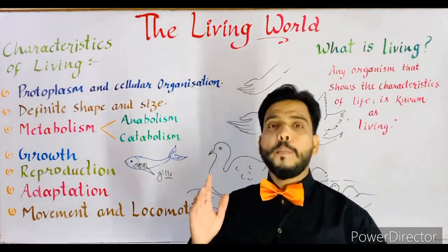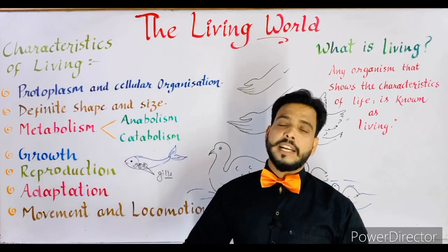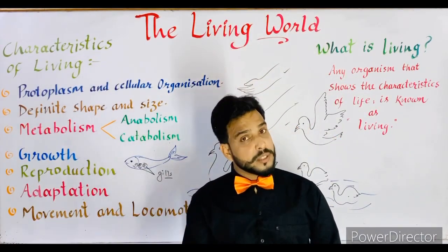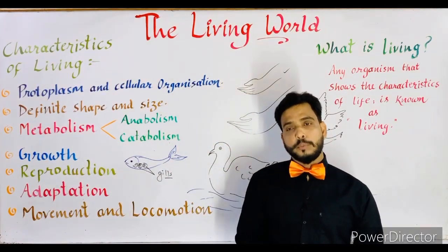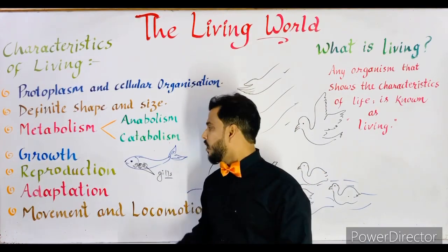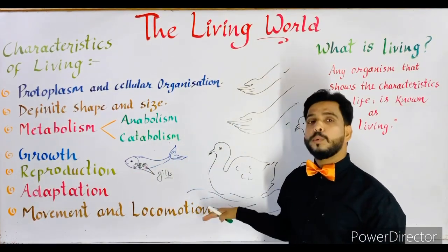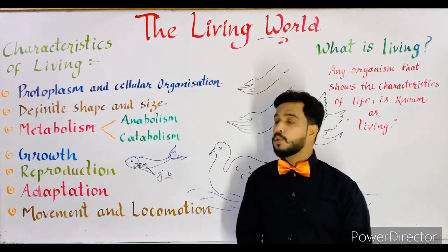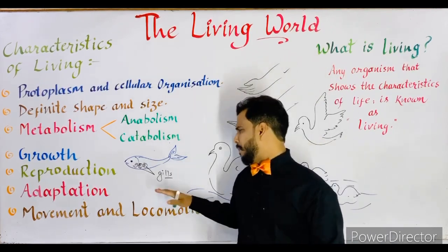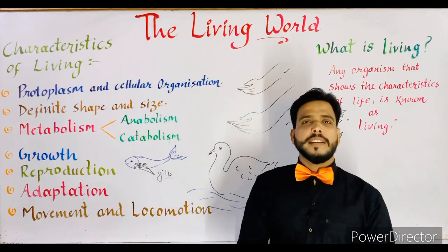The last character is movement and locomotion. Movement takes place at a definite position — for example, moving your head or hand without changing your overall position. But if an organism moves from one place to another, that is locomotion. In locomotion the position is changed, while in movement the position does not change. Living beings show both movement and locomotion, while non-living do not. Plants only show movement, not locomotion — how plants take movement will be explained in later videos.